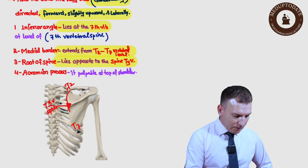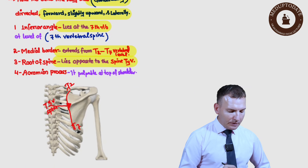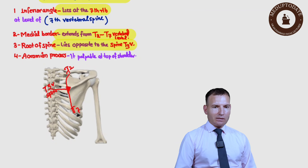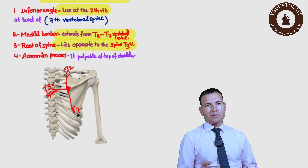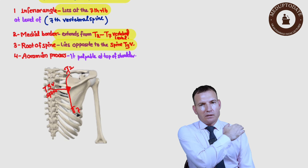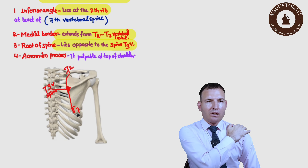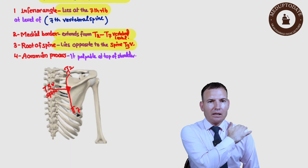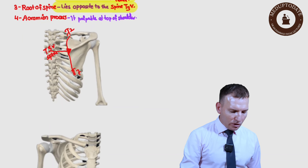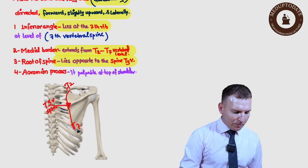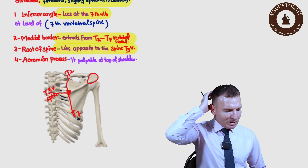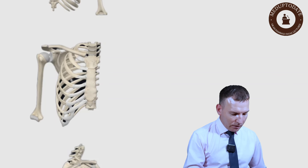The acromion process is palpable. When you place your hand on the shoulder, the bone you feel is the acromion — it is the corner part that is subcutaneous because there is no muscle over it, making it easily palpable. We will discuss additional palpable parts in a later discussion.